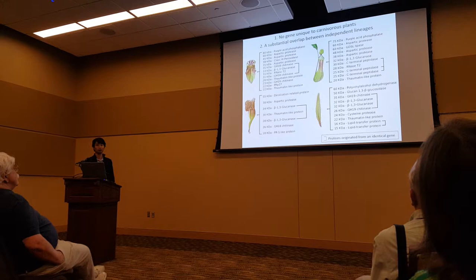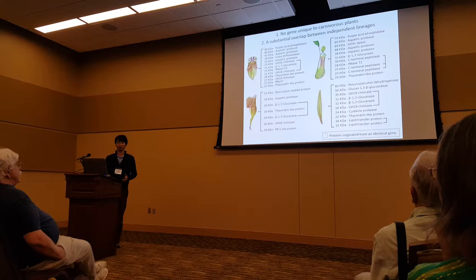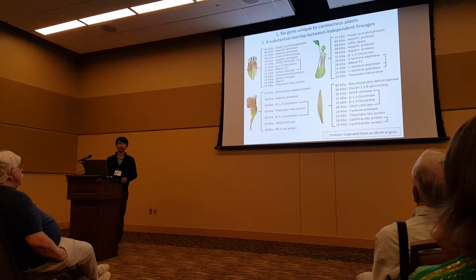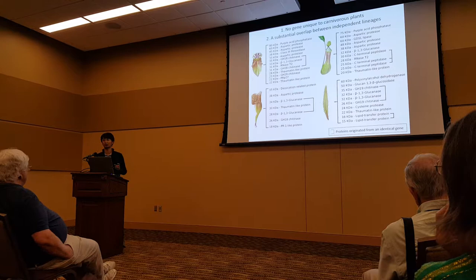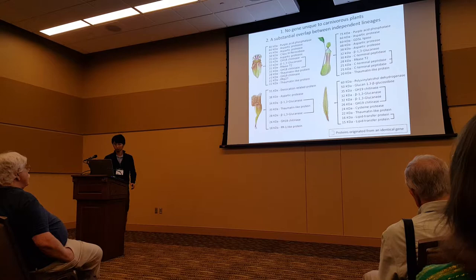This is a list of identified proteins. First of all, we noticed that there is no gene unique to carnivorous plants. In other words, they have homologues in non-carnivorous plants like Arabidopsis. It means that they didn't invent their evolutionary novelty from scratch — they repurposed something that existed in their common ancestor.